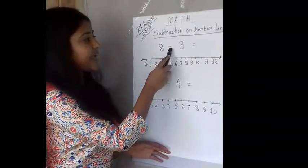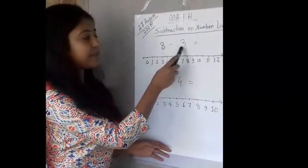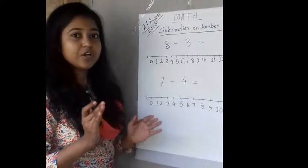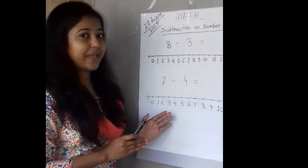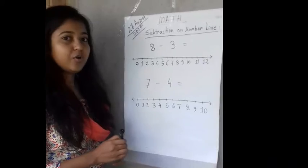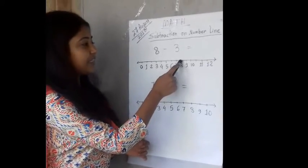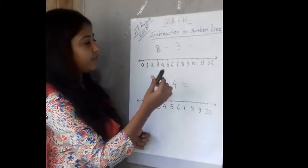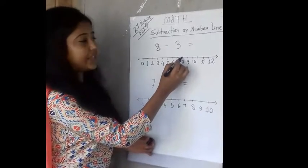And here 8 minus 3. So you have to subtract 3 from 8. What we are going to do? We will draw lines from 8. See, here 8. So from 8 number we will draw lines.